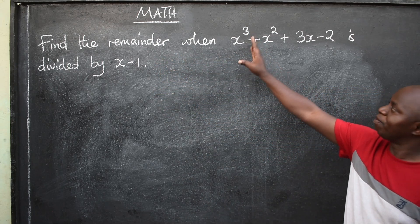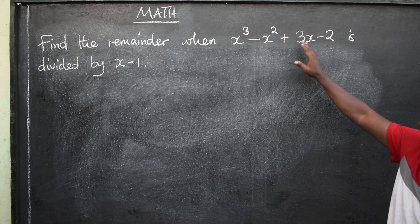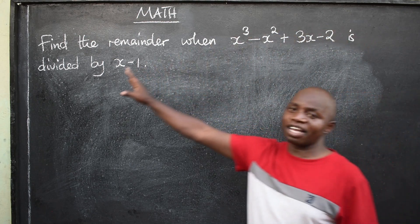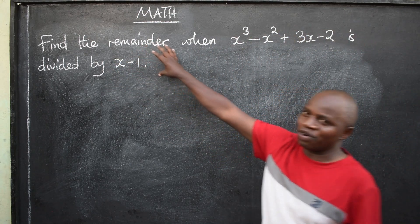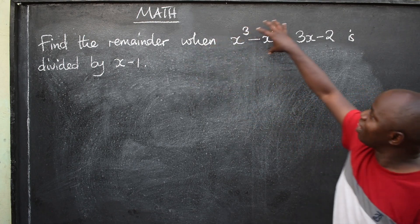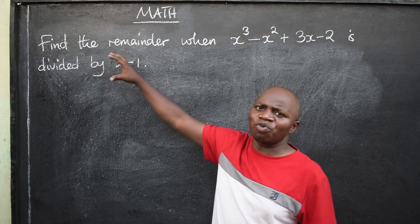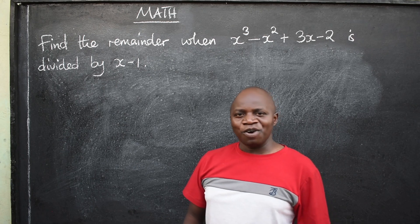Let's look at this question on the board. Find the remainder when x cubed minus x squared plus 3x minus 2 is divided by x minus 1. We want to know the remainder when this polynomial is divided by this.